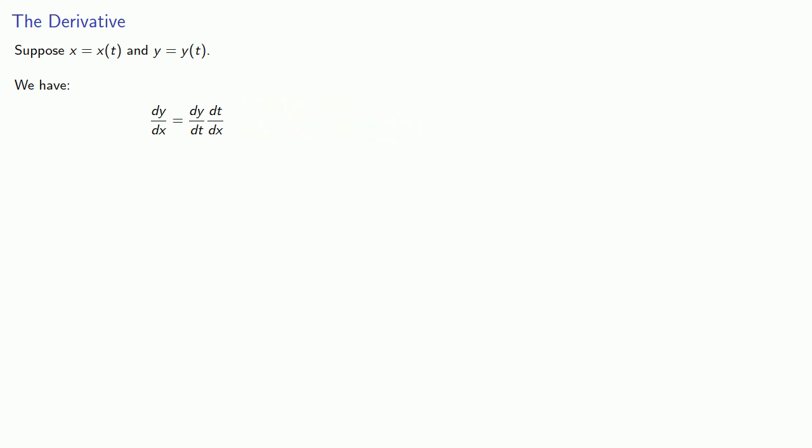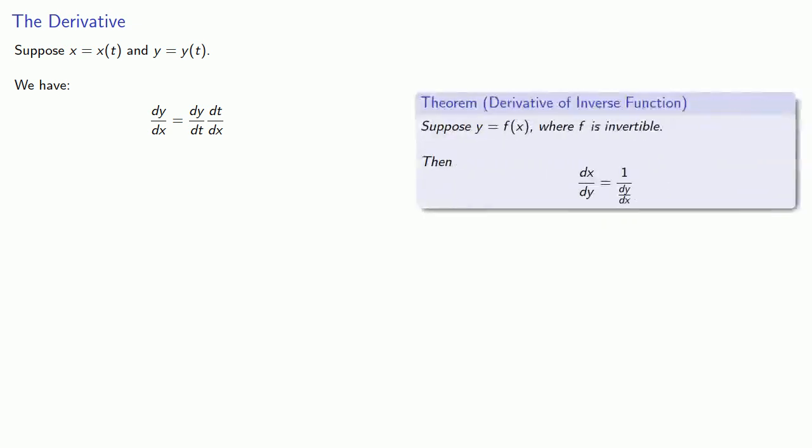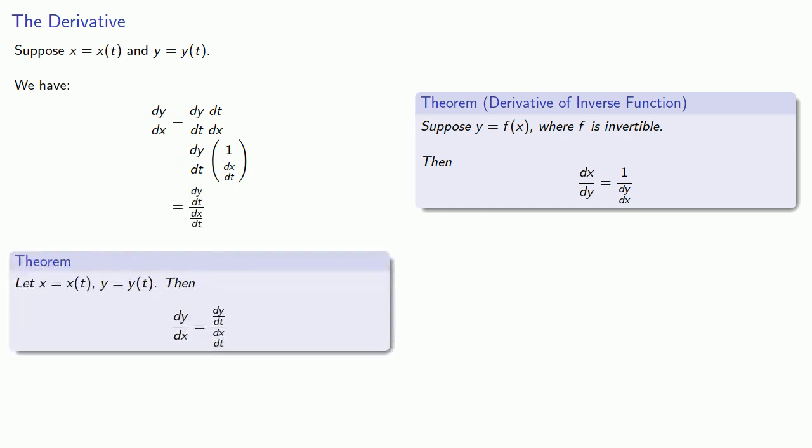And again, x is probably invertible anywhere we care to look, so this dt dx, well that's really the same as 1 divided by dx dt, or dy dt divided by dx dt. And this leads us to the result: let x be some function of t, let y be some function of t, then dy dx is the quotient of the derivatives.